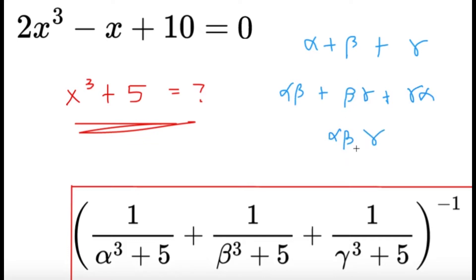And we would know what this thing is. So these are the only three values that we can get from Vieta's formula. So we have to probably write this in terms of something else.